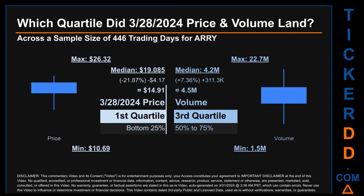Hello, my name is Maria. Which quartile did March 28, 2024 price and volume land in, across a sample size of 446 trading days? The maximum end-of-day price for ARRY was $26.32 while the minimum was $10.69. Within that price range, March 28, 2024's price of $14.91 landed within the first quartile — meaning it was within the bottom 25% of all sampled end-of-day prices. The day's volume landed within the third quartile, that is within the 50–75% range of all sampled daily volume, which saw a max of 22.7 million and a minimum of 1.5 million.